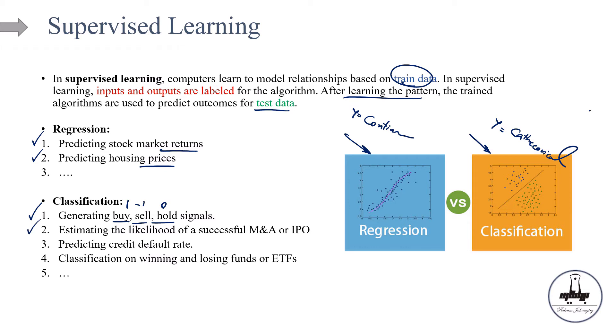Another example will be estimating the likelihood of a successful M&A or IPO or SPAC in financial market. So you have a bunch of features. And at the end of the day, you want to predict that you want to calculate the likelihood or basically say that if it's going to be a failure or success. Third example. You can think of predicting credit default rate. It has huge applications in finance and insurance business. And basically you want to predict what's the probability of someone defaulting.